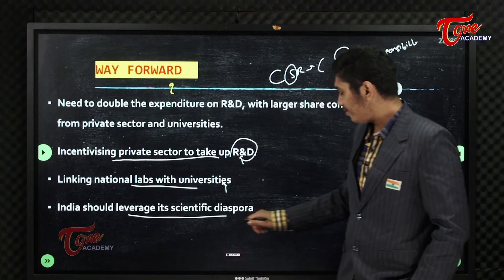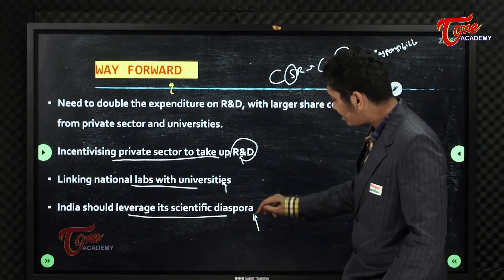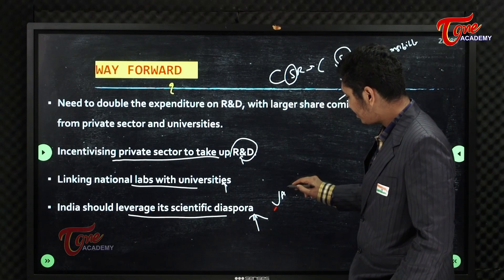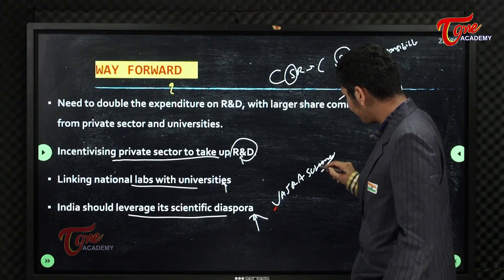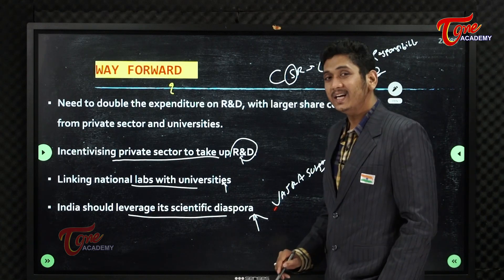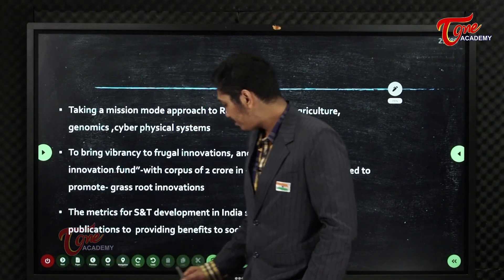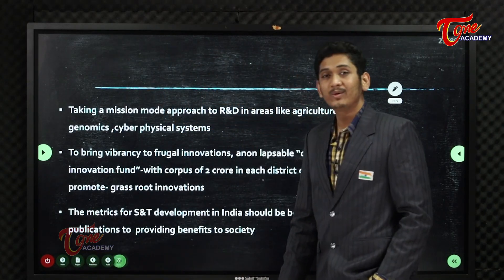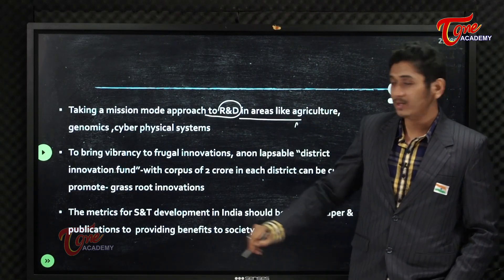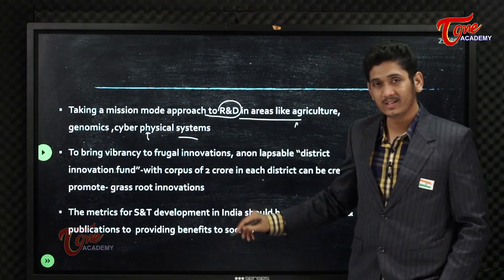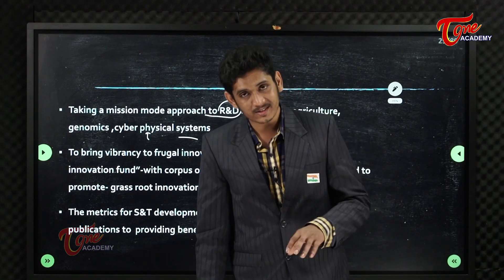India should leverage its scientific diaspora. The Vajra scheme is one such initiative to bring scientists from abroad back to contribute to our country. We should also take a mission-mode approach in R&D in areas like agriculture, genomics, and cyber-physical systems. There was recently a national cyber-physical systems policy introduced.